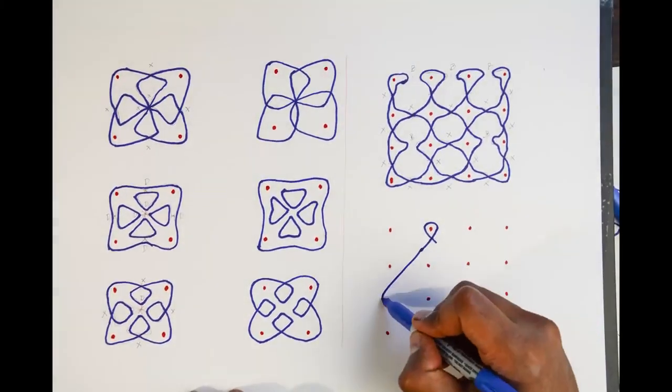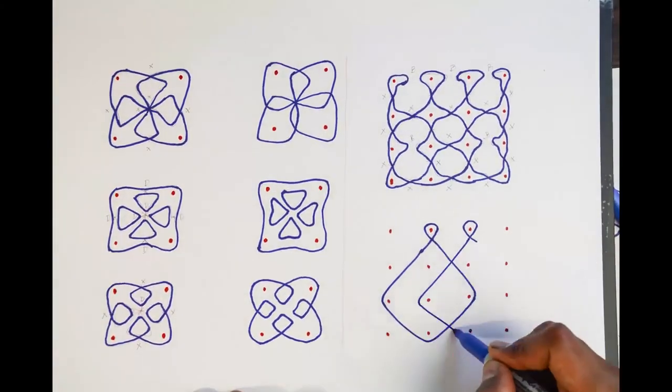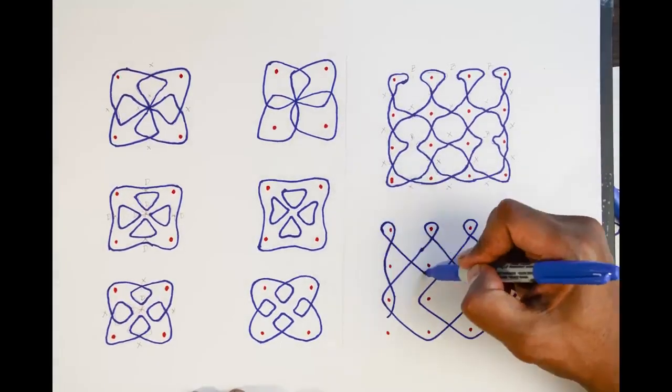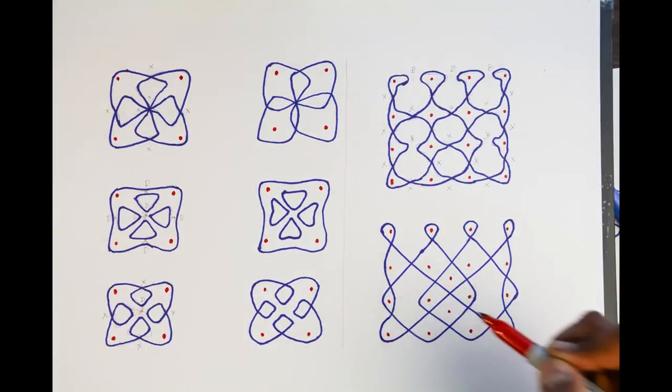Once you finish the kolam and smooth the lines, you may even decide to place more dots for beauty, as long as the three mandatory rules for a kolam are not violated.